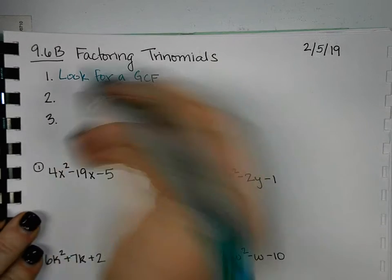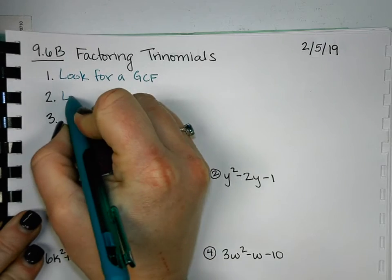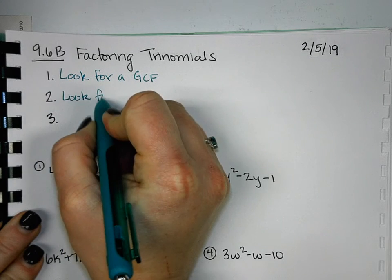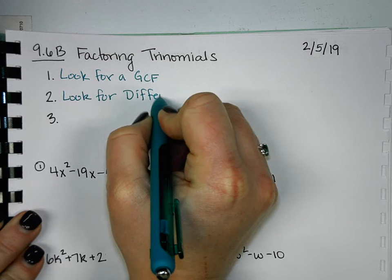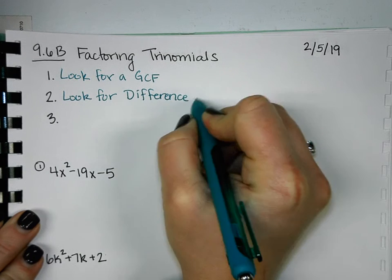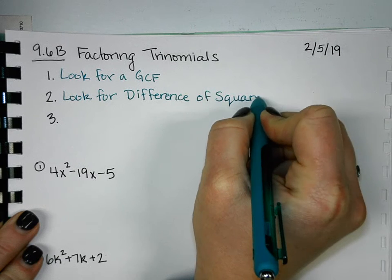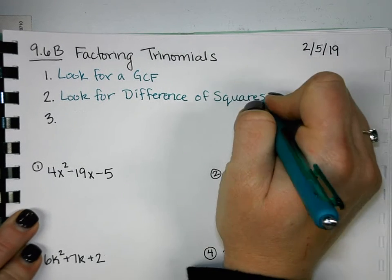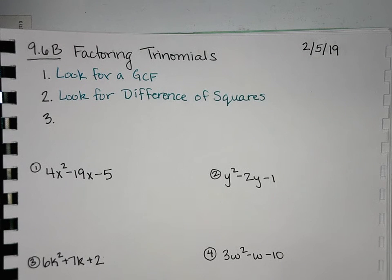After we look for a GCF and then obviously take it out, then we're going to look for difference of squares. We're going to look to see, do we have a binomial, are they perfect squares, are they being subtracted? Because if you took out a GCF and then you have difference of squares, then you're done.